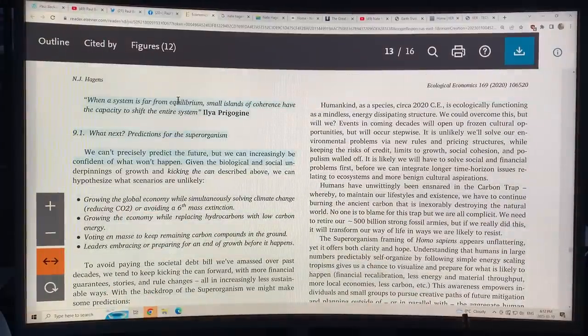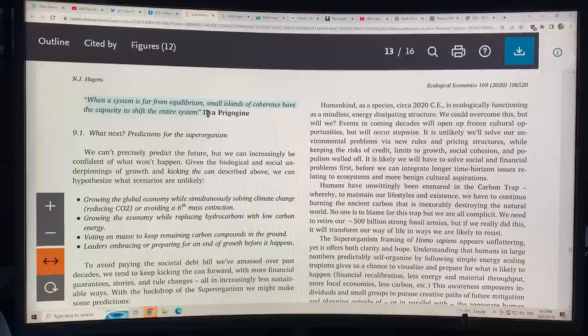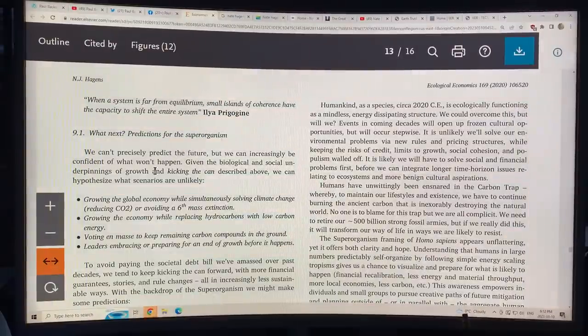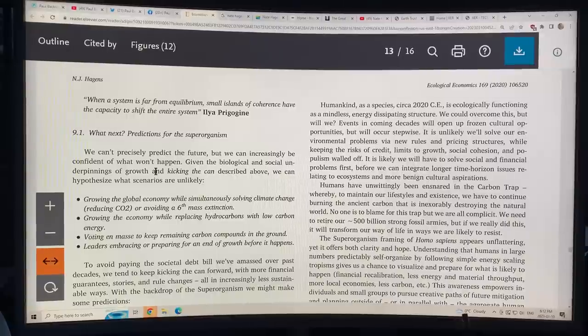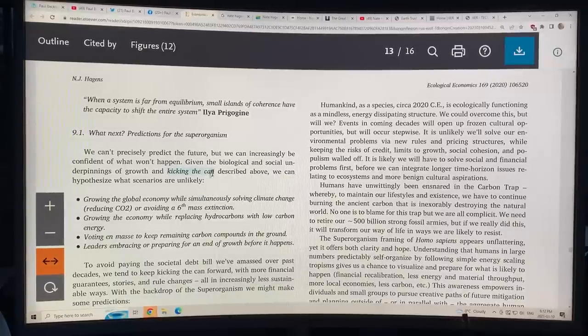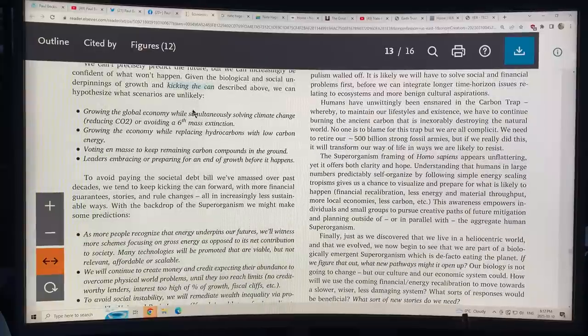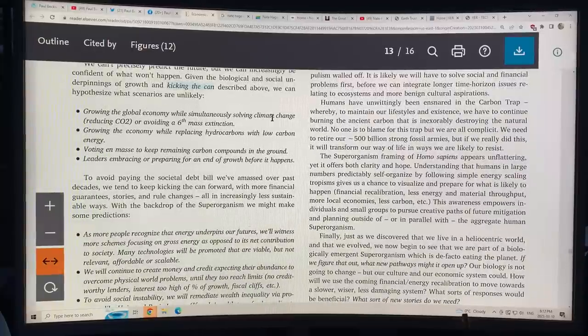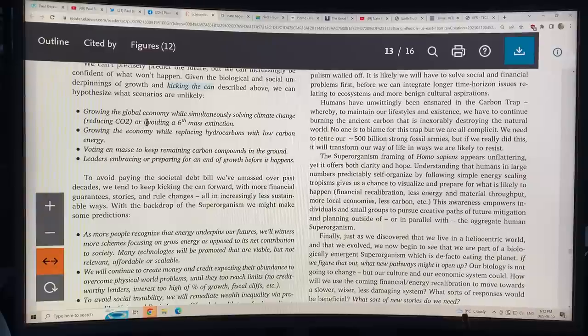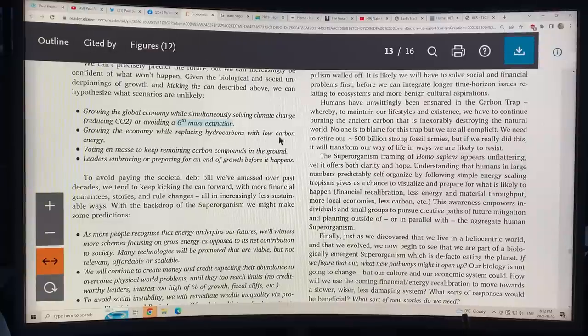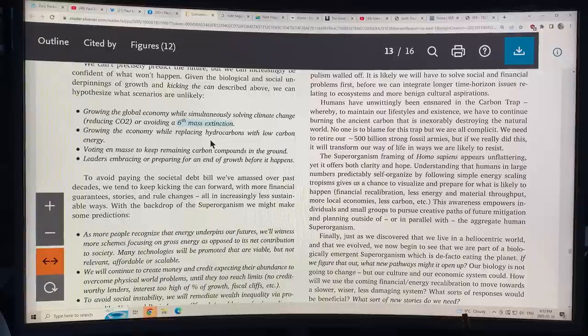What's next? Predictions for the superorganism. We can't precisely predict the future, but we can be confident of what won't happen. So we've been kicking the can down the road. What is very unlikely to happen? We can't grow the global economy while simultaneously solving climate change, reducing CO2, and avoiding a sixth mass extinction. Growing the economy while replacing hydrocarbons with low carbon energy? We can't do that. Hydrocarbons are growing as renewables are growing.